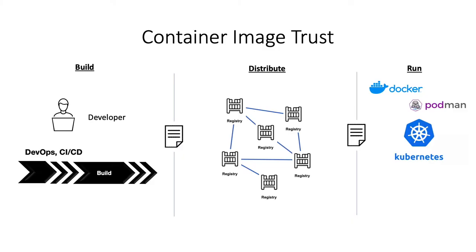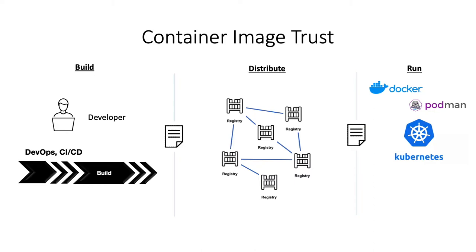In a normal scenario of a container image lifecycle, we have three stages: the build, the distribute, and the run. Starting on the left-hand side is where we build our containers — this can be on a developer's computer or a CI/CD pipeline like Tekton or Jenkins. What eventually comes out of this stage is a container image. The natural next step is to distribute it by uploading it to a registry or multiple registries. And finally, all images eventually will want to be run — downloaded, unpacked, and run by a runtime such as Docker, Podman, Kubernetes, containerd, or CRI-O.